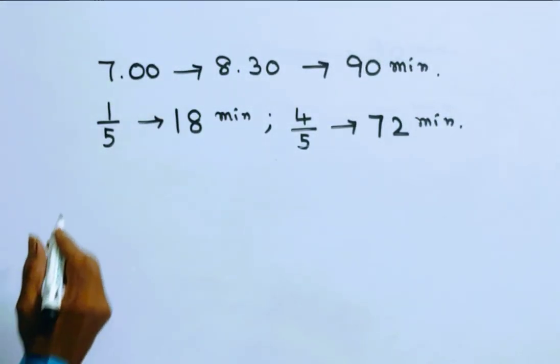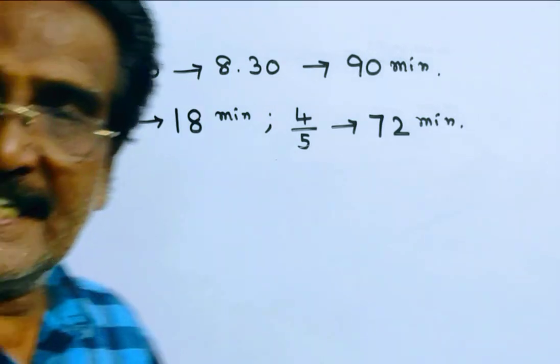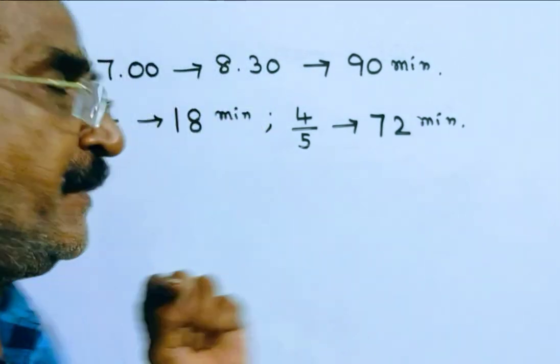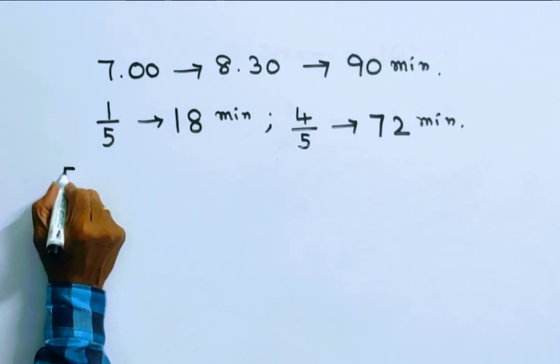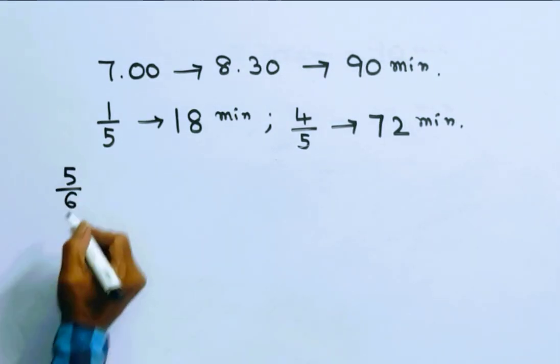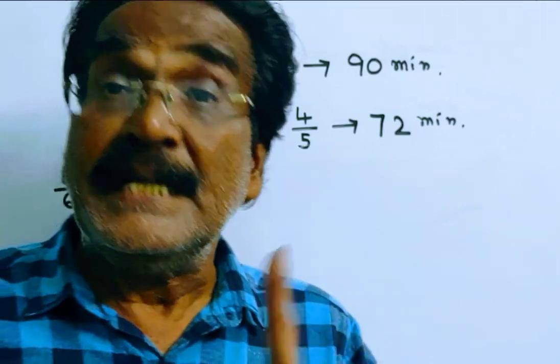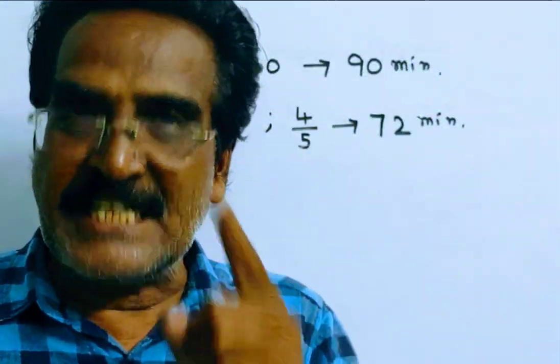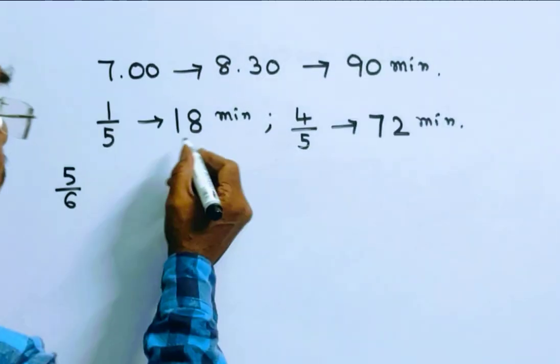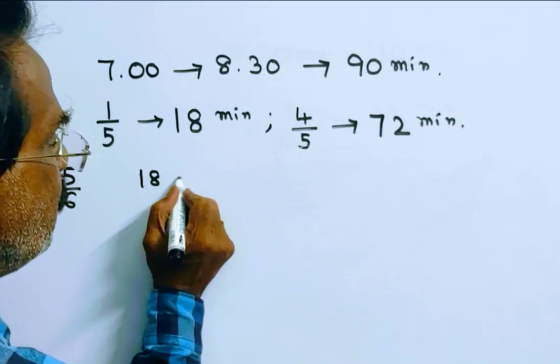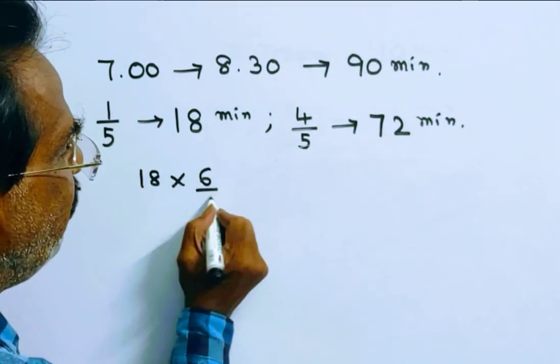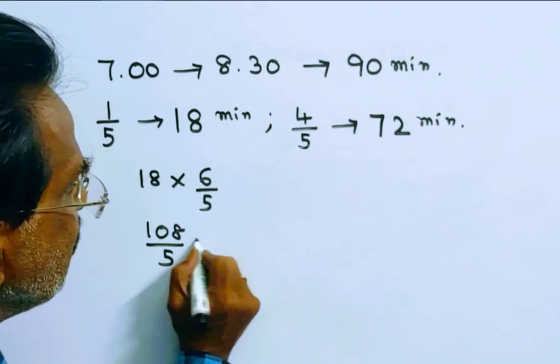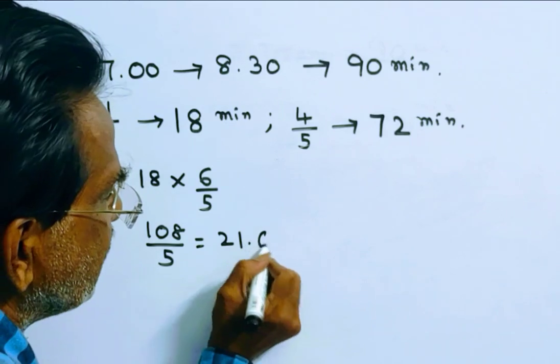Devesh travels one-fifth of the distance at 5 by 6 of his usual speed. If he travels at 5 by 6 of his usual speed, he takes 6 by 5 of his usual time. So 18, the usual time, into 6 by 5, 108 by 5, that is equal to 21.6 minutes.